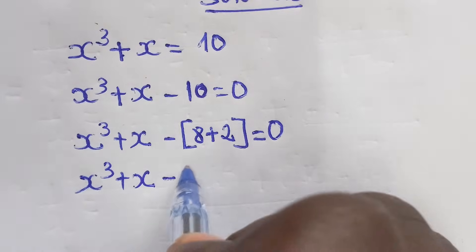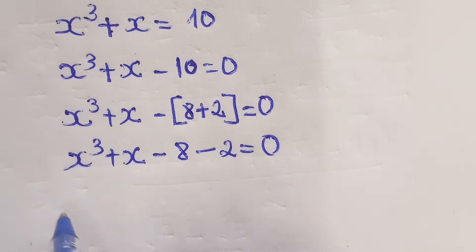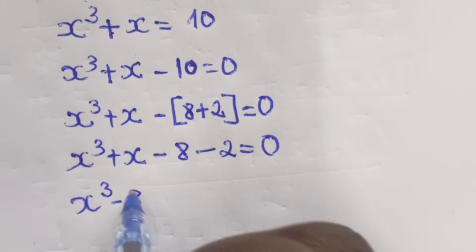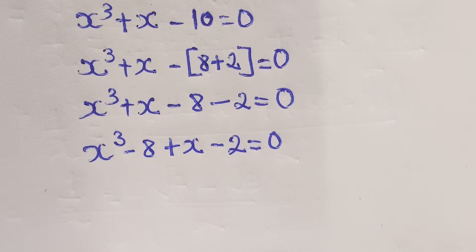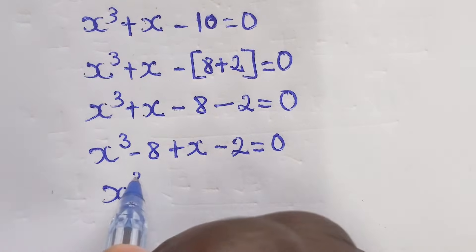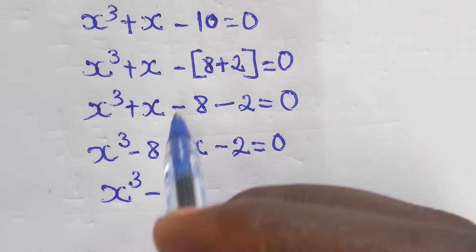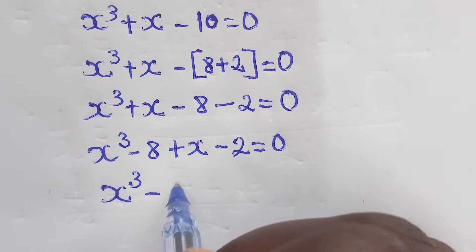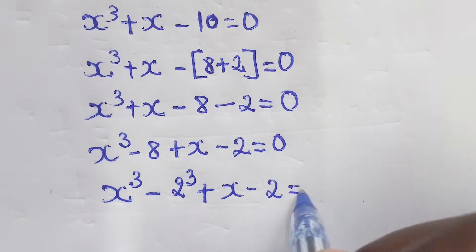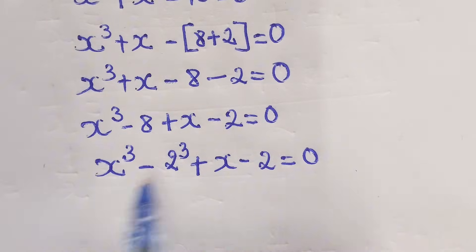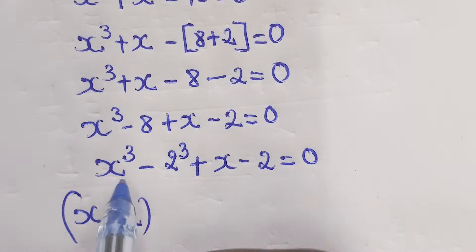So x³ + x - 8 - 2 = 0. By grouping like terms: (x³ - 8) + (x - 2) = 0. Right here, x³ - 8 can be changed using base 2, since 8 = 2³, giving x³ - 2³ + x - 2 = 0.